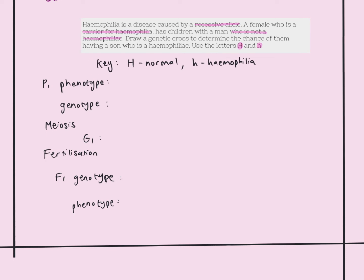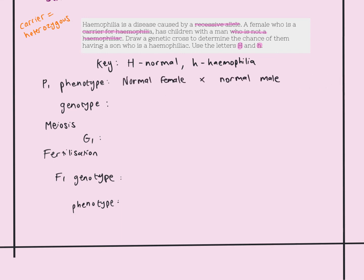The man is not a hemophiliac — he is normal. A woman who is a carrier for hemophilia is essentially heterozygous. So on her X chromosomes she will have a capital H allele and a small h allele. Because hemophilia is a recessive condition, she will still be normal — the capital H allele masks her recessive hemophiliac allele. So both the female and the male are phenotypically normal, even though the woman is a carrier.